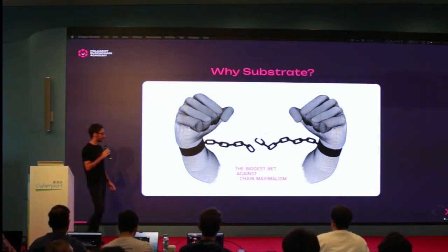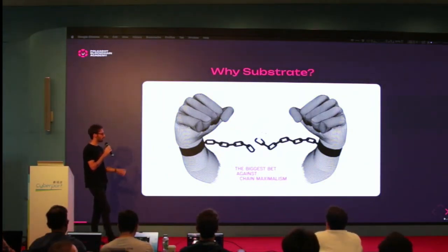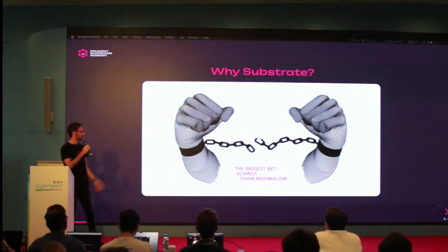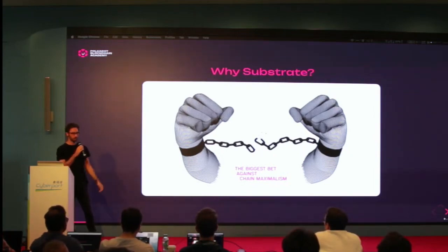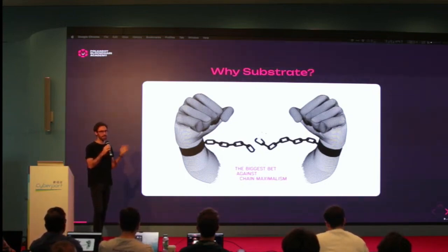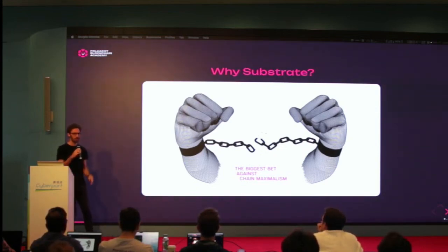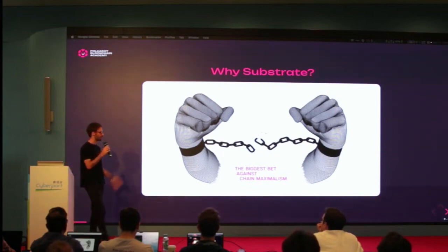This image is taken from a talk from 2018 from Gab — it's a pretty good talk and I have it in the speaker notes. Substrate and all the things it enables is a bet against chain maximalism. Chain maximalism is the opposite of a multi-chain future — it's the assumption that there's going to be one blockchain to rule them all, or we're going to optimize one blockchain to be the best of the best.